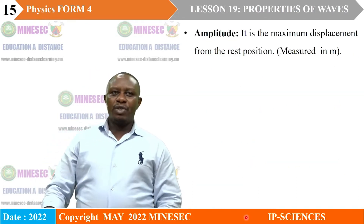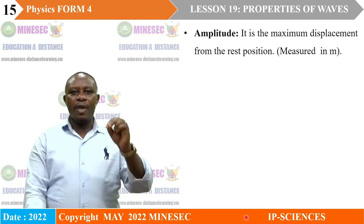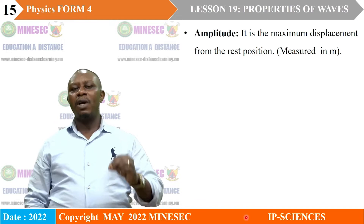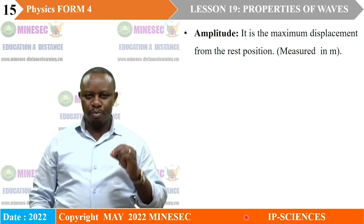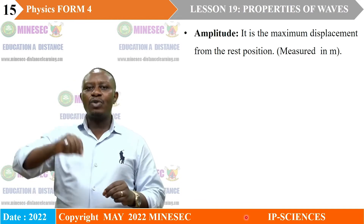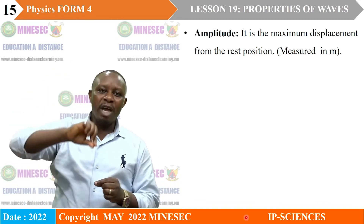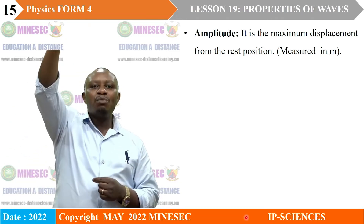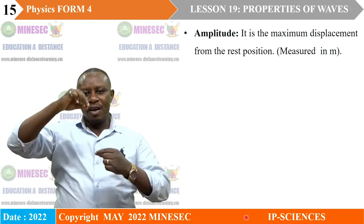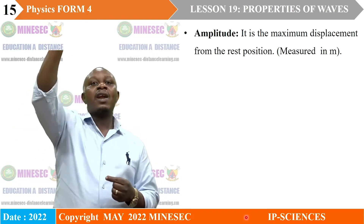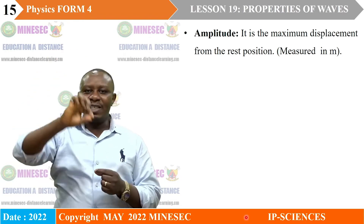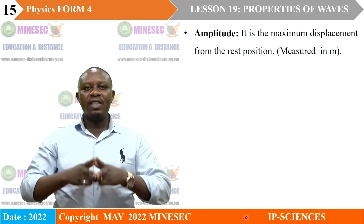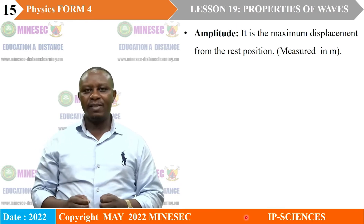Amplitude: the amplitude of a wave is the maximum displacement from the rest position. It is a distance measured from the rest position to the maximum point of a wave — that is from the equilibrium position to the crest. That distance is what we call the amplitude. It is measured in meters.